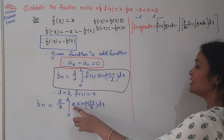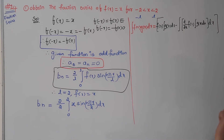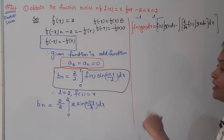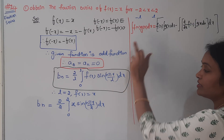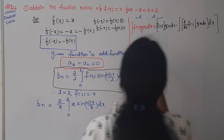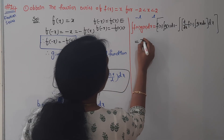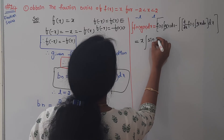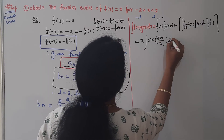We use LIATE. x is our algebraic function, so x is the first function. Sin(nπx/2) is trigonometric, so it is the second function. In the place of f(x) substitute x. We apply: first function times integral of second — x times integral of sin(nπx/2) dx.